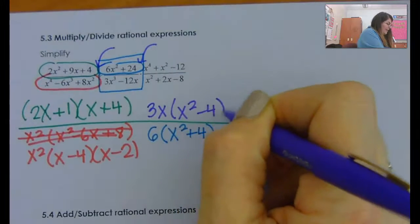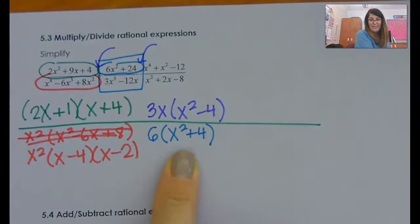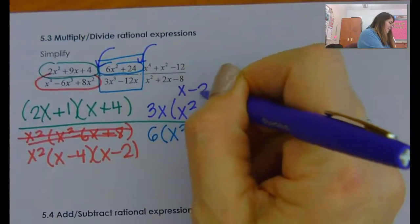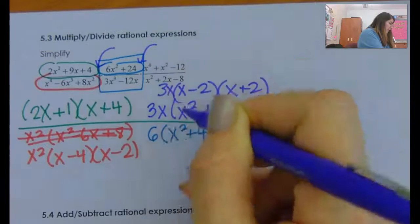3x, x squared minus 4. But hold up, x squared minus 4 is a difference of squares. This is a sum of squares, that doesn't do anything. So this is x minus 2, x plus 2, and then I've got a 3x there.